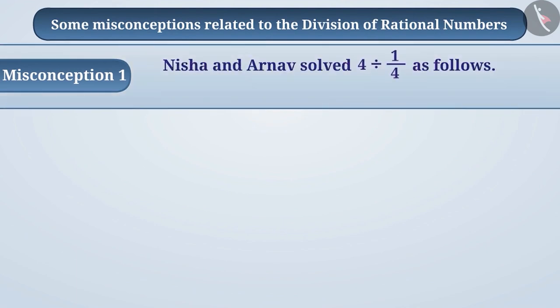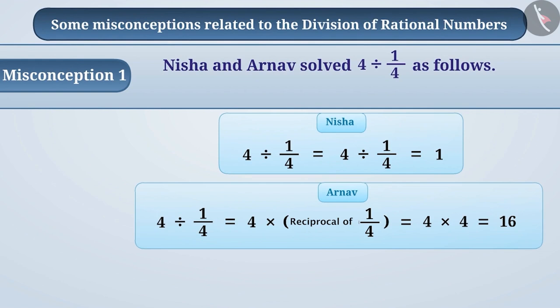Misconception 1. Nisha and Arnav solved 4 divided by 1/4 in the following way. Nisha got the result 1 and Arnav got the result 16. Find out who got it correct.